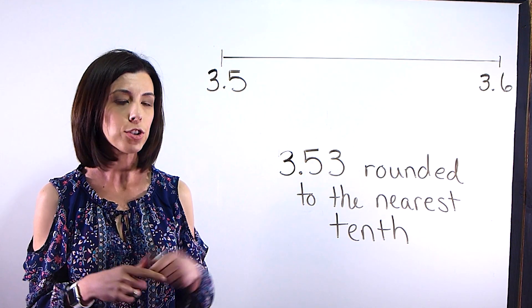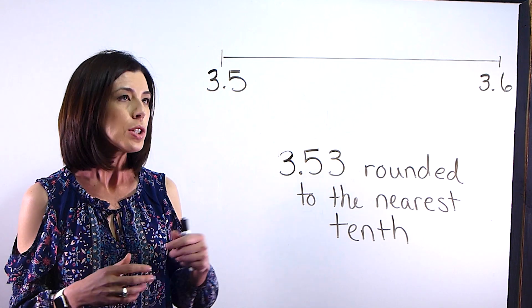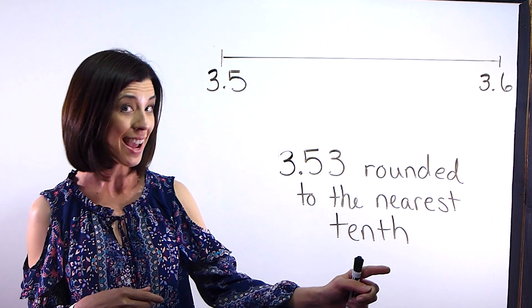Let's take a look at what's actually happening on the number line and I have a feeling it's going to be really clear. So you can see here that since we're rounding to the nearest tenth,